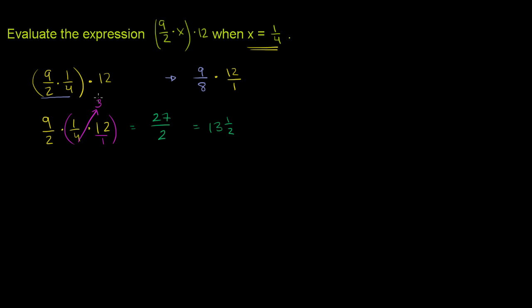We could multiply it times 12 over 1. You could just multiply them, but an easier thing would be to simplify the numerator and the denominator before you multiply them.